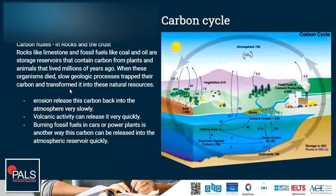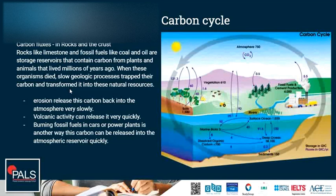Carbon fluxes in rocks and the crust. Rocks like limestone and fossil fuels like coal and oil are storage reservoirs that contain carbon from plants and animals that lived millions of years ago. When these organisms died, slow geologic processes trapped their carbon and transformed it into these natural resources. Erosion releases carbon back into the atmosphere very slowly, volcanic activity can release it much more quickly, and burning fossil fuels in cars or power plants is another way this carbon can be released into the atmospheric reservoir quickly.